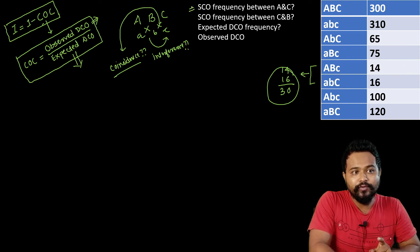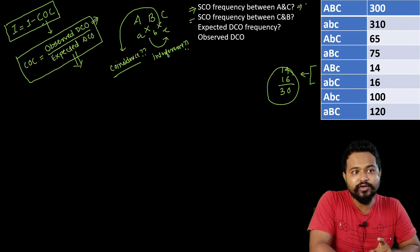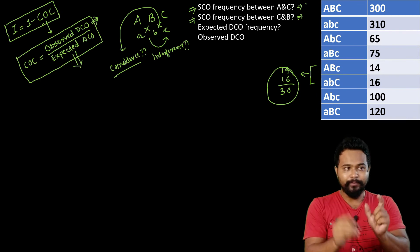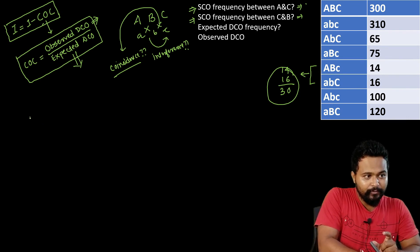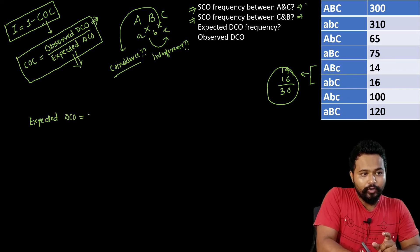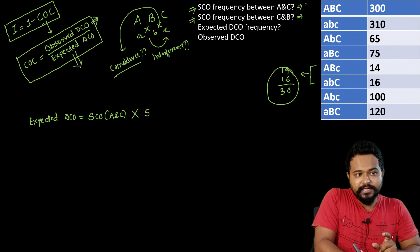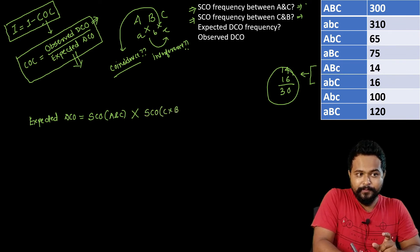The expected double crossover is calculated by multiplying the single crossover frequency between A and C by the single crossover frequency between C and B, then multiplying by the total progeny.